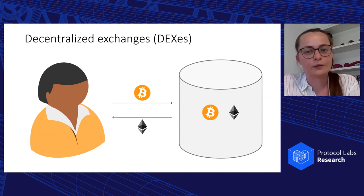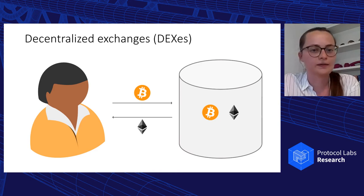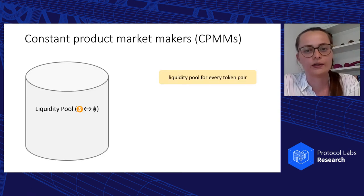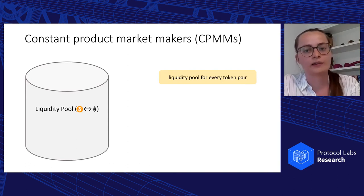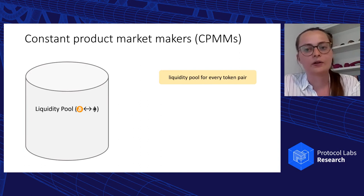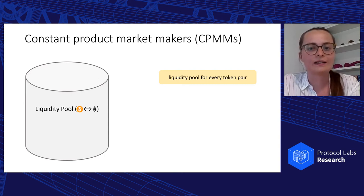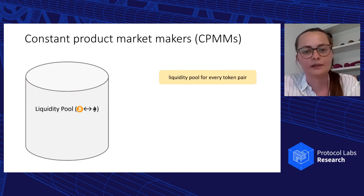Going back to Alice, who wants to exchange Bitcoin for Ether, she does this by interacting directly with the respective smart contract. The biggest decentralized exchanges are constant product market makers or a variation thereof, such as Uniswap, SushiSwap, and PancakeSwap. In our analysis, we focus on Uniswap V2, but the functionality of these exchanges is identical, and a similar analysis would apply to other variations of constant product market makers.